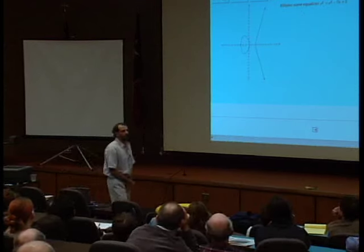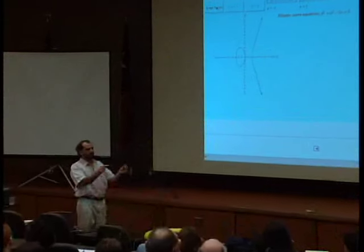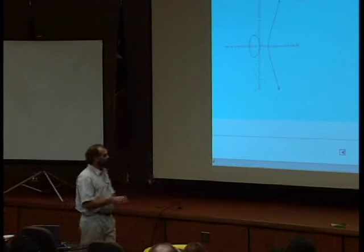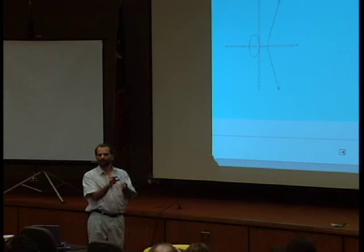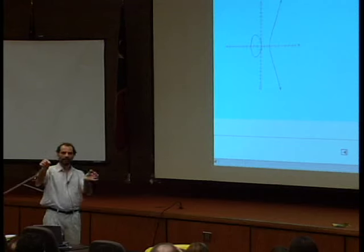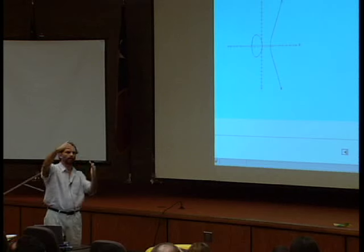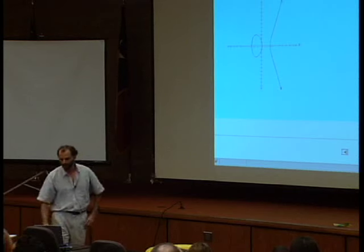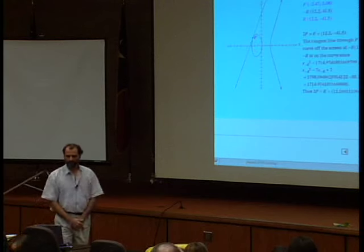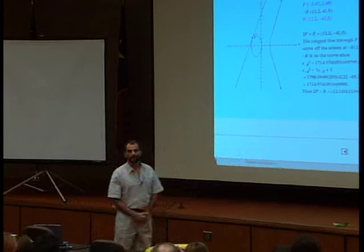What would be, for example, doubling a point? We have two points — we can draw the line through them and do this operation. But if we have just one point, what's the line through it? In a limiting sense, if one point is moving until it becomes the other, the line that goes through them becomes the tangent line. So if we had just one point, you can double it. In this case, the double of this point meets the curve outside the screen.